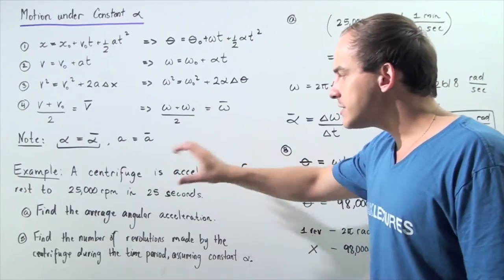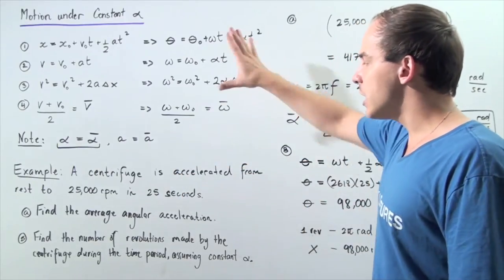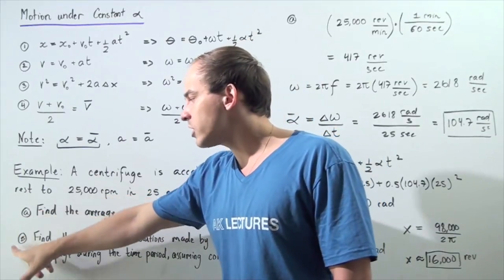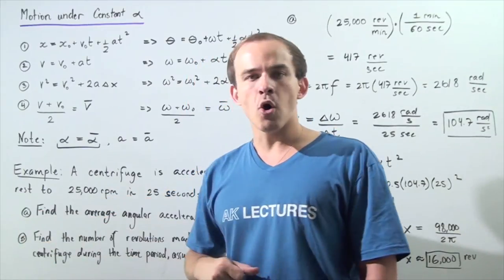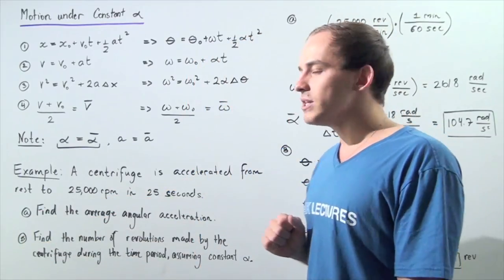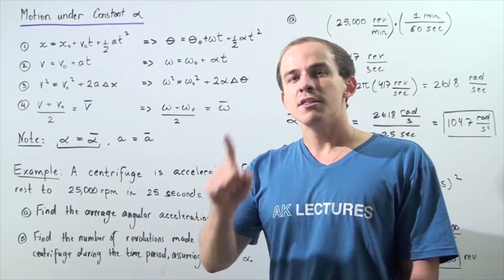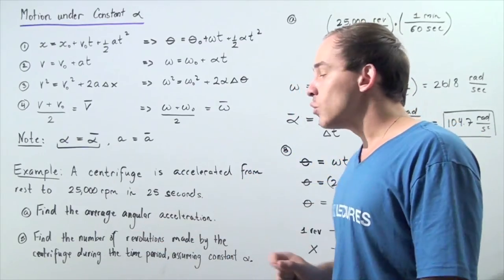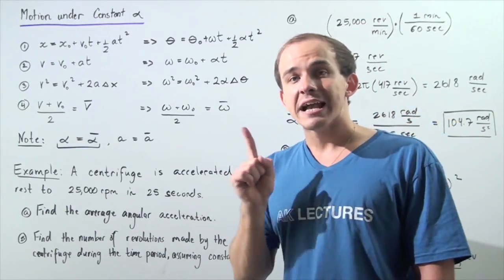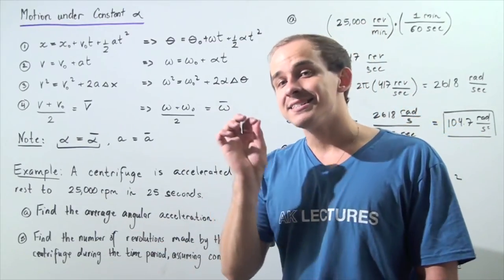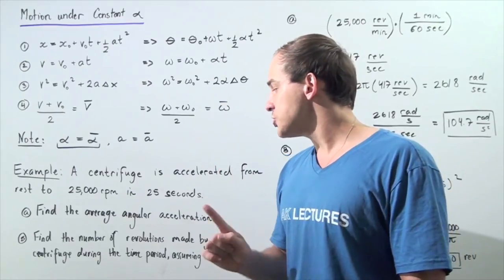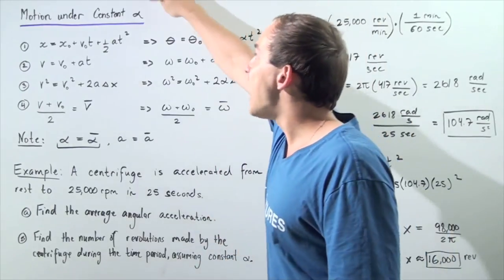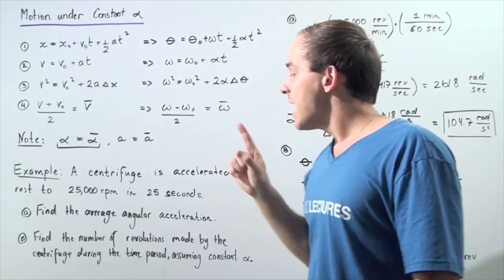Using this information and these equations, we want to calculate part A and part B. In part A we want to find the average angular acceleration, which is the same as the instantaneous angular acceleration because we have constant angular acceleration.